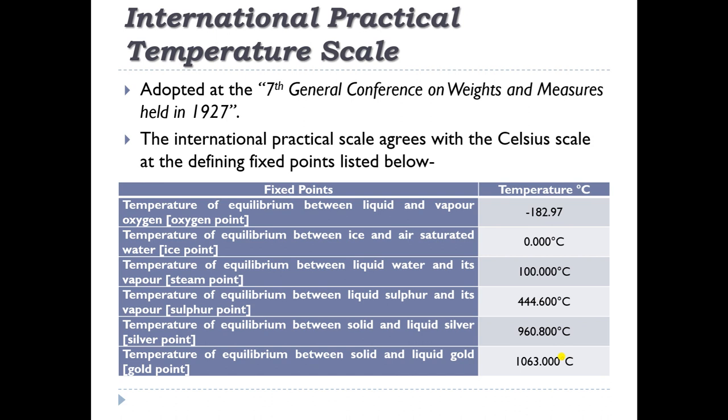For interpolation between these primary fixed points, and numerous secondary fixed points, a thermometer is specified with an equation to establish a relationship between thermometer property and temperature, as discussed earlier. There are different possibilities: directly proportional, linear, and so on. The method of evaluating constants in the correlation is also specified.